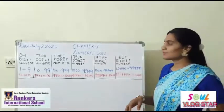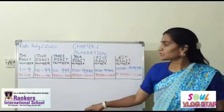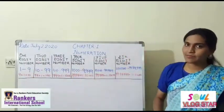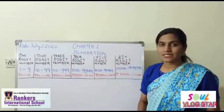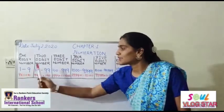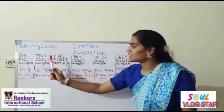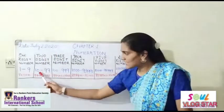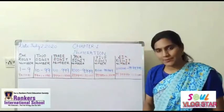We'll start from the one digit number. One digit number starts from 1 to 9. So 1 is the smallest one digit number and 9 is the greatest one digit number. If we add 1 to 9 it will become 10. Now 10 is the two digit number, so two digit numbers start from 10 to 99. 10 is the smallest two digit number and 99 is the greatest two digit number.